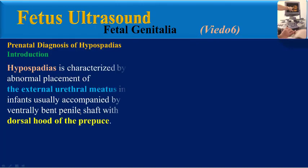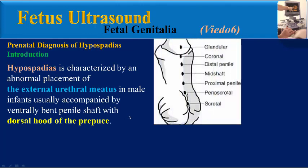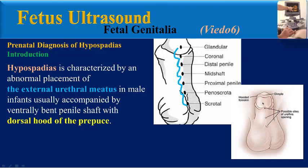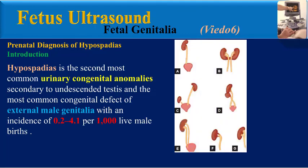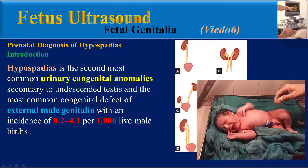Introduction. Hypospadias is characterized by an abnormal placement of the external urethral meatus in male infants, usually accompanied by a ventrally bent penile shaft with a dorsal hood of prepuce. Hypospadias is the second most common urinary congenital anomaly, secondary to undescended testes, and the most common congenital defect of external male genitalia, with an incidence of 0.2 to 4.1 per 1,000 live male births.